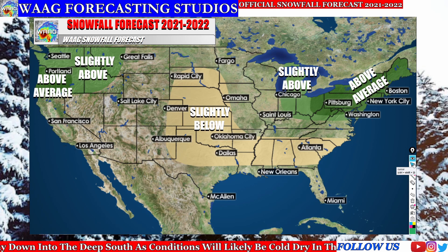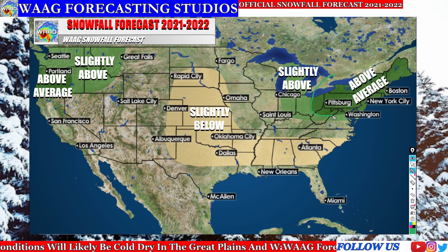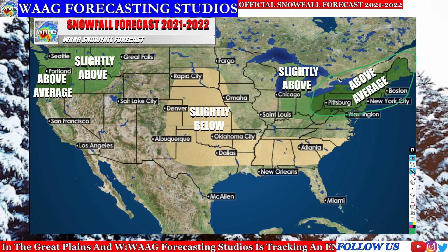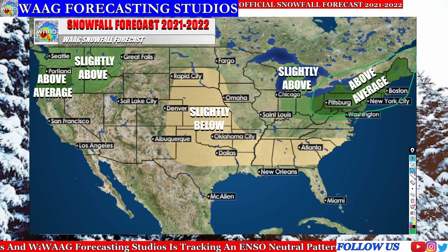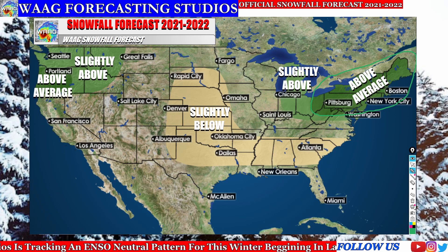On our next slide we're going to be taking a look at our above average region. We have two above average regions. We're going to start with the one up in the northeastern United States, anywhere from eastern Ohio all the way down through northern Virginia, then up through the entire northeastern United States including New England. Here you're going to be seeing probably about 10 to even 20 inches above average. Some of these areas around the Great Lakes could expect about 20 inches above average snowfall possible.